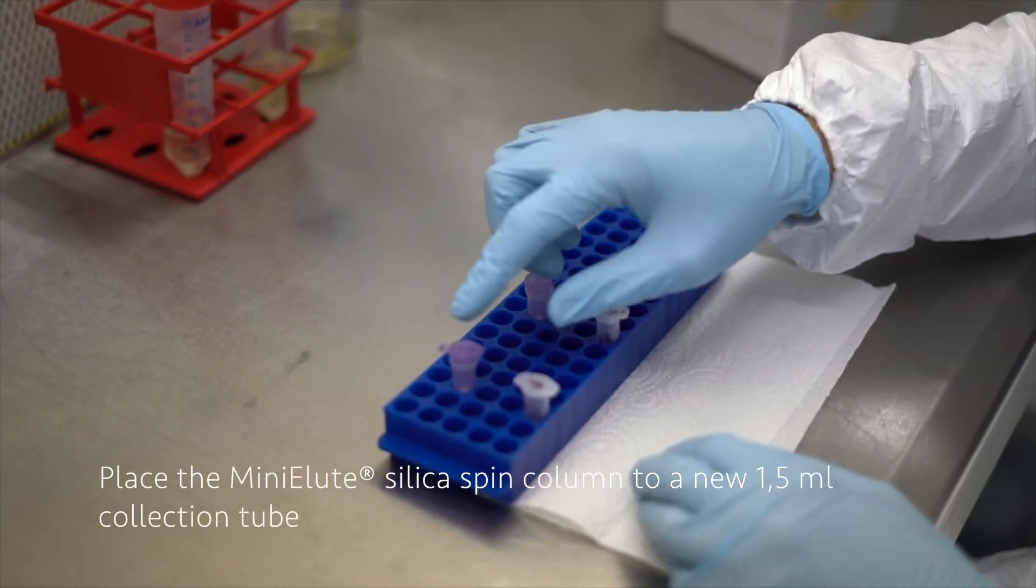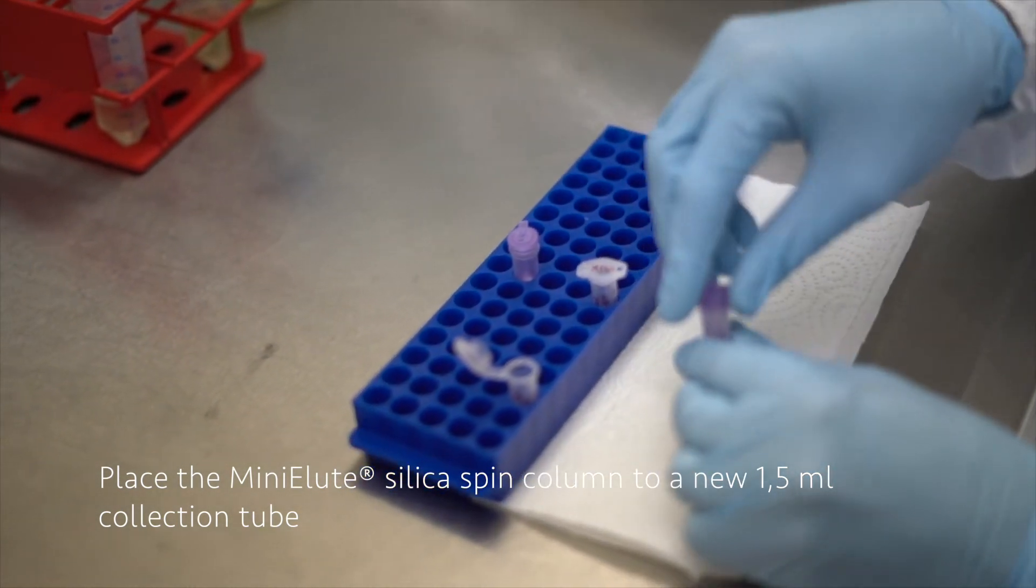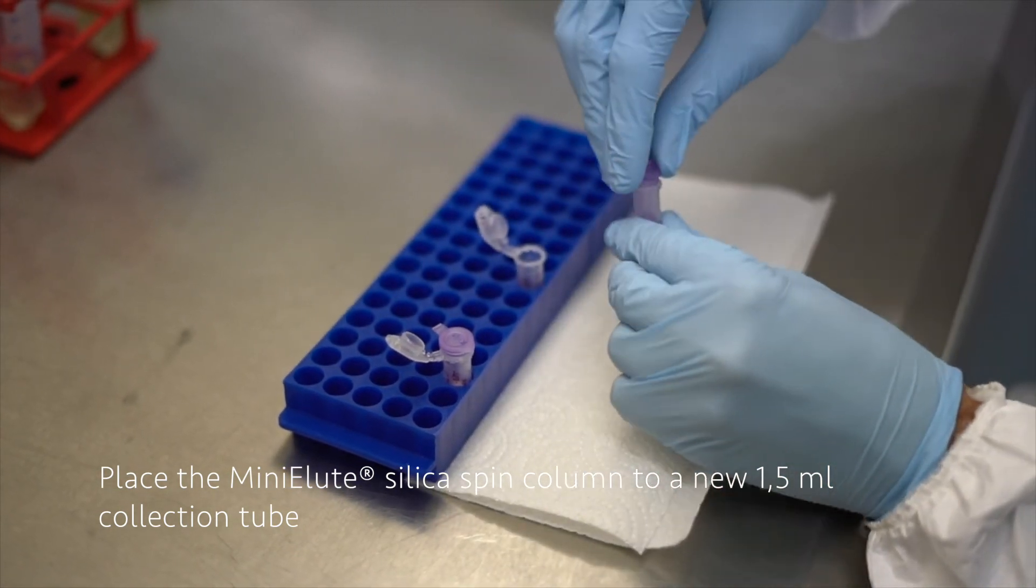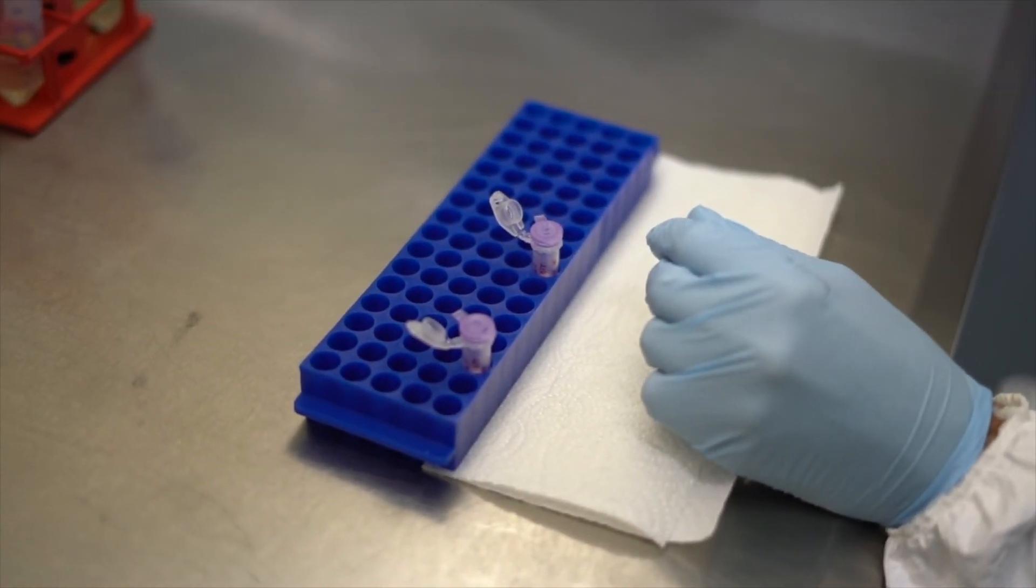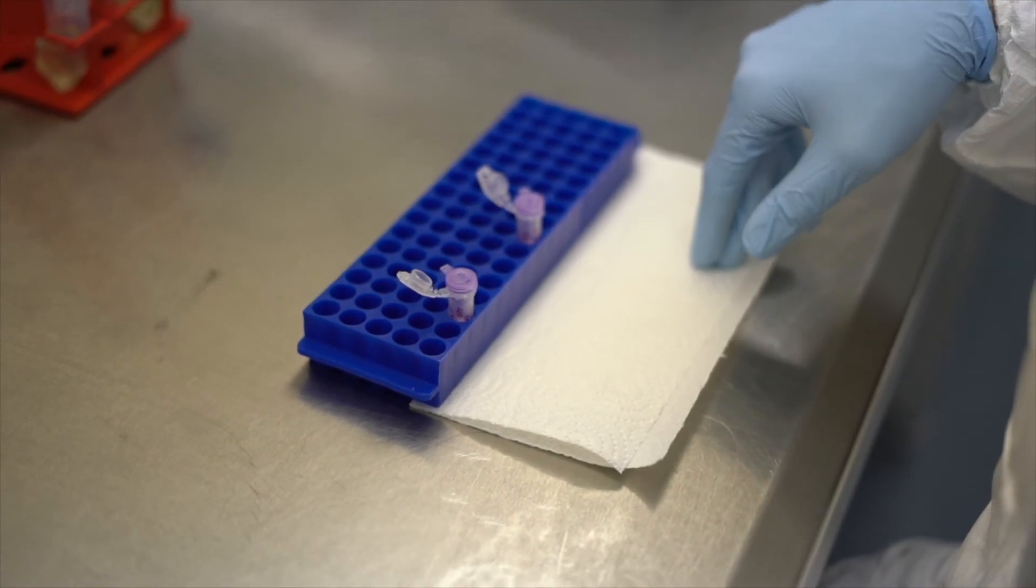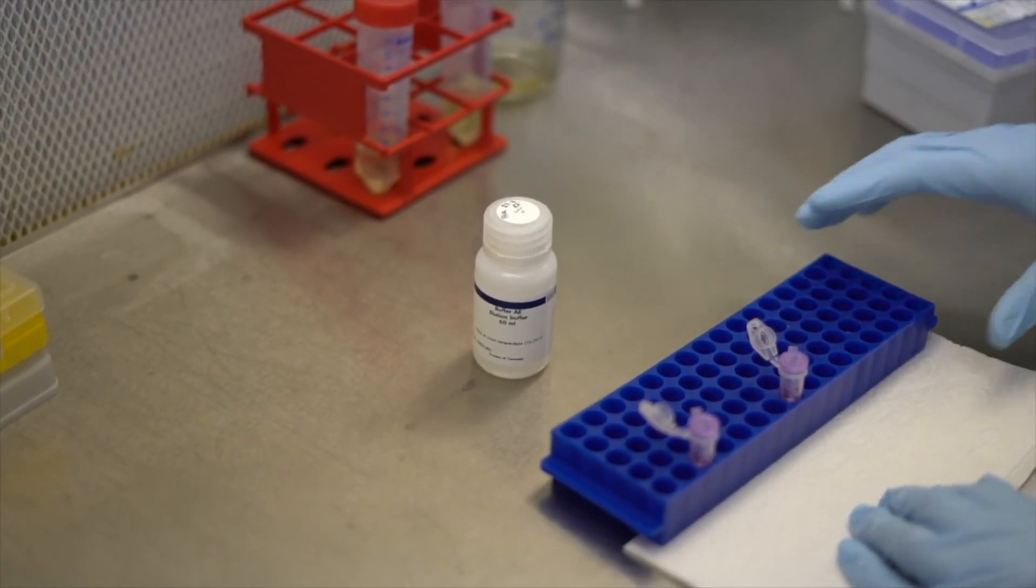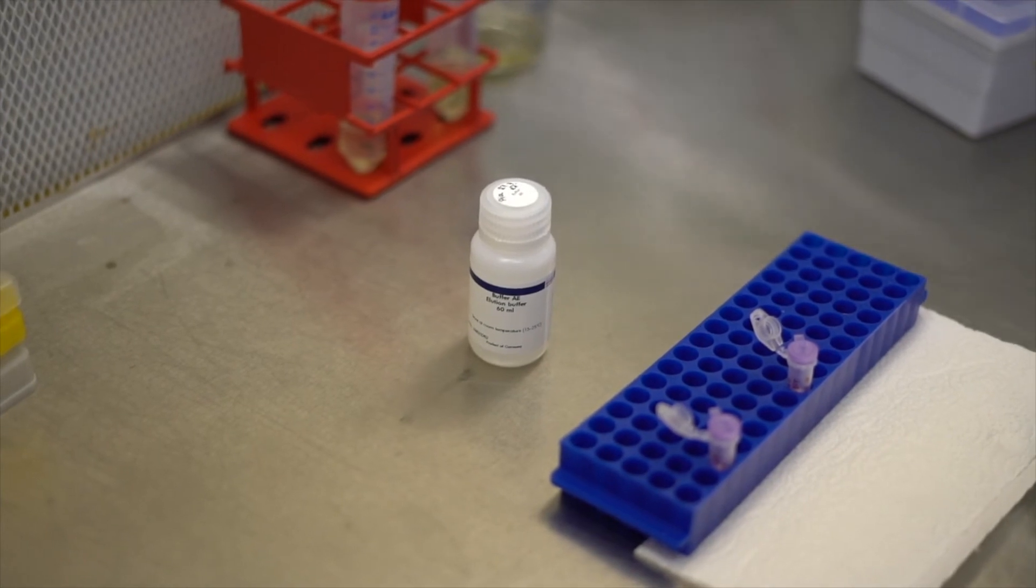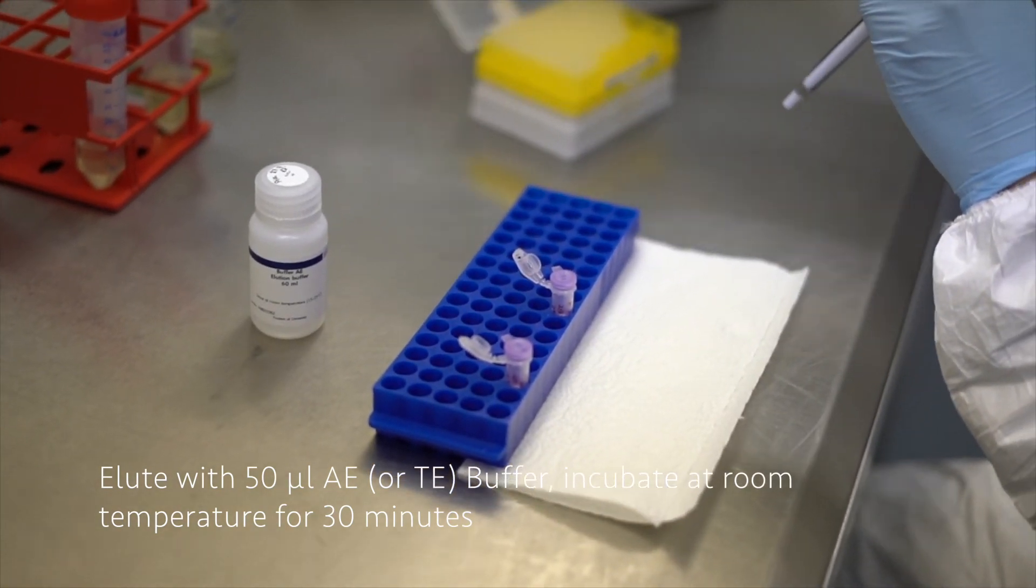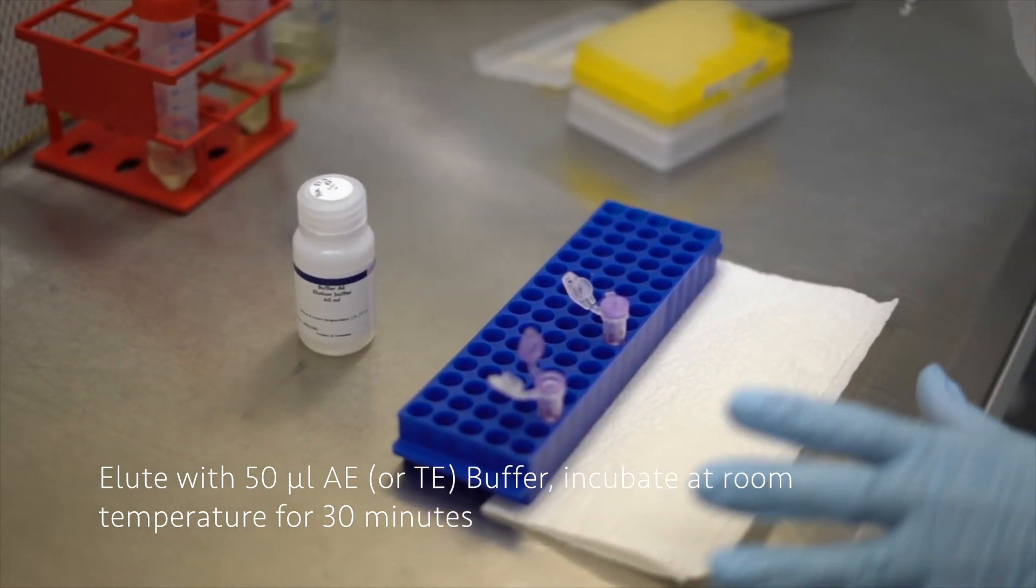Now we can place the MinElute column in a new 2 milliliter or 1.5 milliliter tube. And then we will elute the DNA bound on the silica membrane using, I will use some AE buffer from a Qiagen plant MinElute column, but if you want you can use also the TE buffer. I'm going to add 50 microliters. The elution will be done twice, so 2 times 50 microliters of elution buffer. And I will incubate it for half an hour at room temperature.